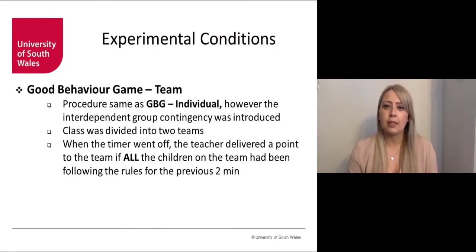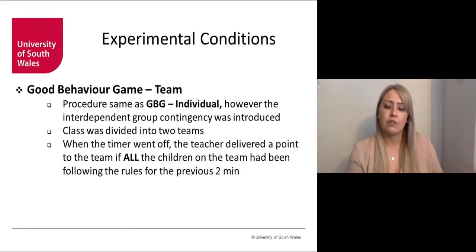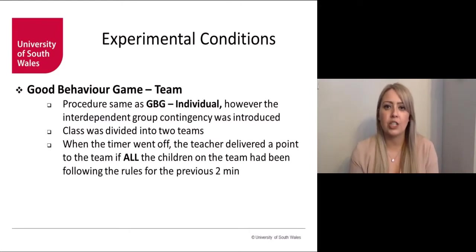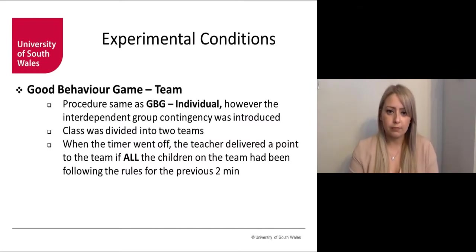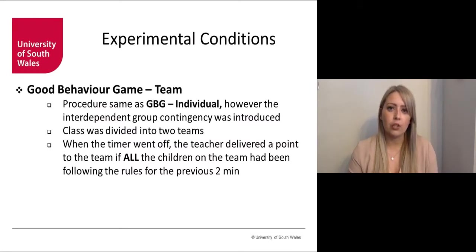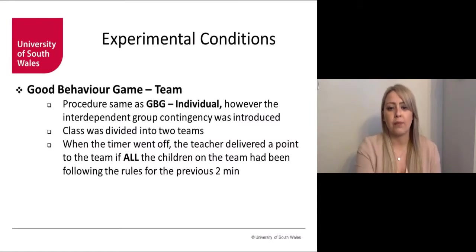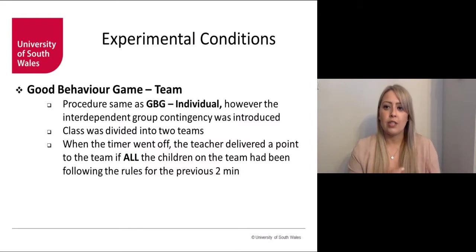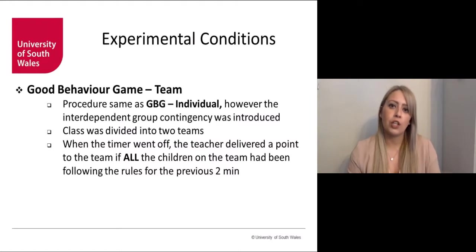During the team game — the interdependent group contingency — all procedures from the individual game remained the same. However, the class was divided into two teams. When the timer went off, the teacher delivered a point to each team only if all children within that team had been following the rules. When deciding on team composition, we asked the teacher to ensure there was at least one child within each team who could model appropriate behaviour.